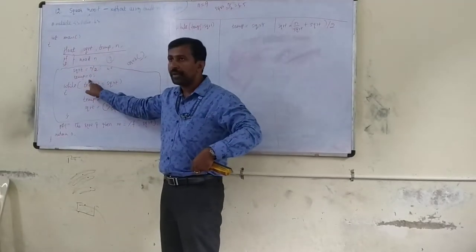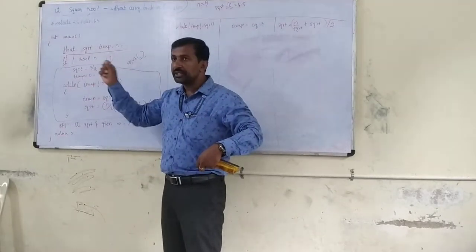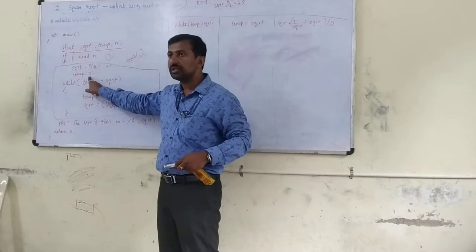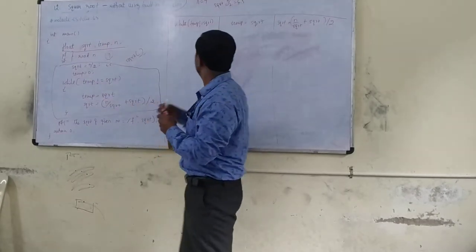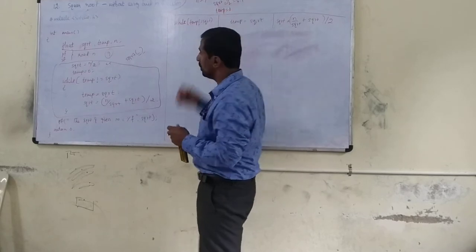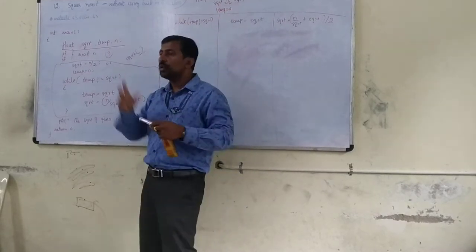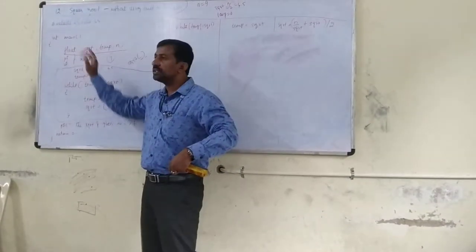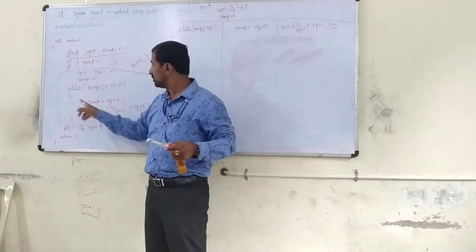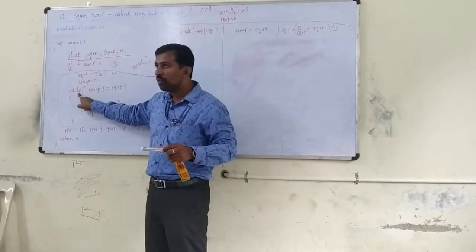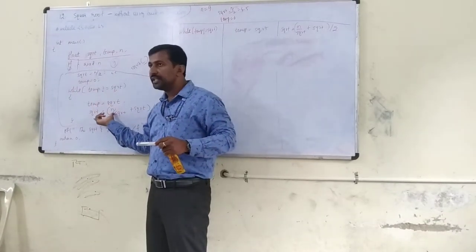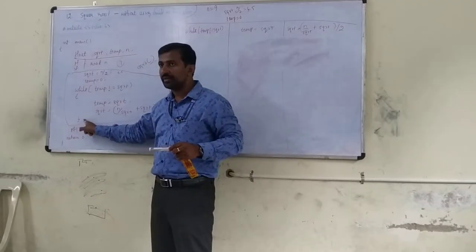Next, the other variable is temp. I am setting the initial value for temp: zero. So my temp value is 0. Two initial values are set now. Can I use a while loop? Yes. So I am going to write the while loop here — while some condition, write the statements, then close it.